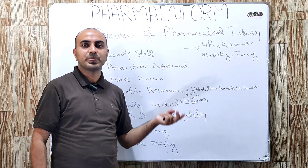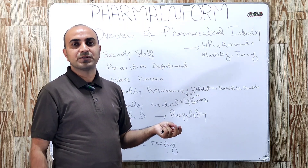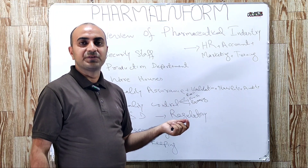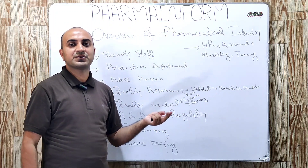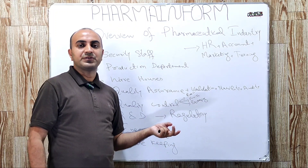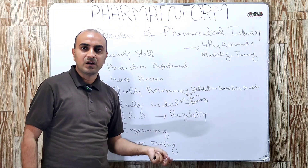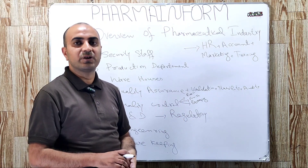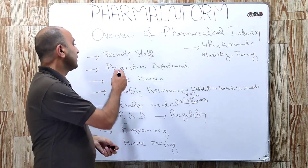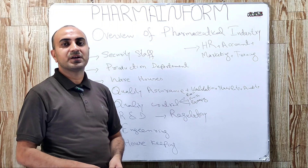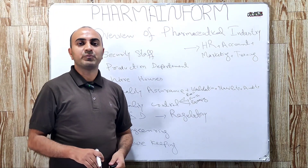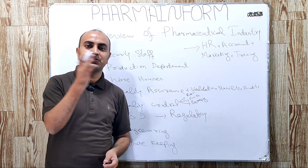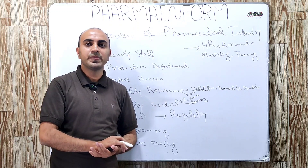Other subsections include semi-solid manufacturing section, sterile manufacturing section, liquid manufacturing section, hormonal manufacturing section, and many more. In production sections there are basically two main categories: one is related to manufacturing and the other is related to packaging.